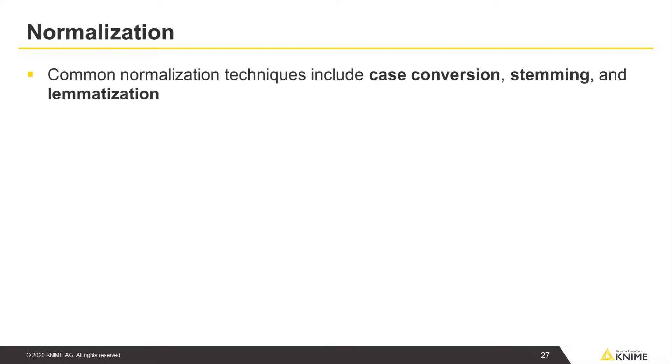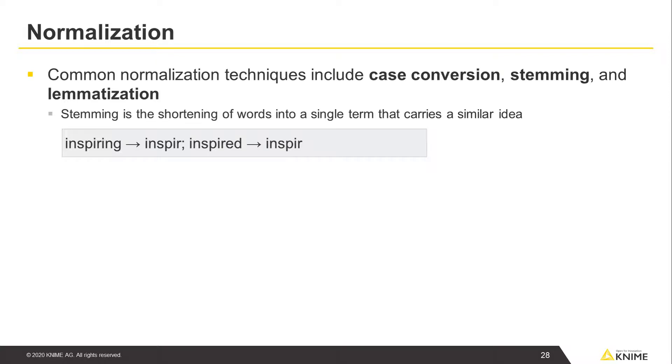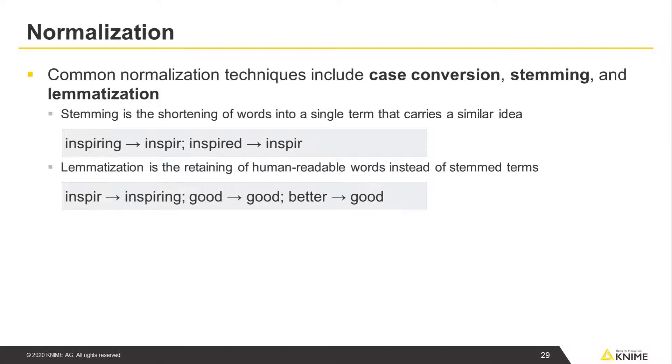Another option to reduce the number of different tokens in the document corpus is normalization. Common normalization techniques include case conversion, stemming, and lemmatization. Stemming is the shortening of words, often from differing parts of speech, into a single term that carries a similar idea. The idea is to reduce the number of individual terms in the corpus without losing meaning in the text, by grouping tokens with similar meanings into one. Lemmatization is a similar approach, retaining human-readable words instead of stem terms, but still reducing the overall feature space.